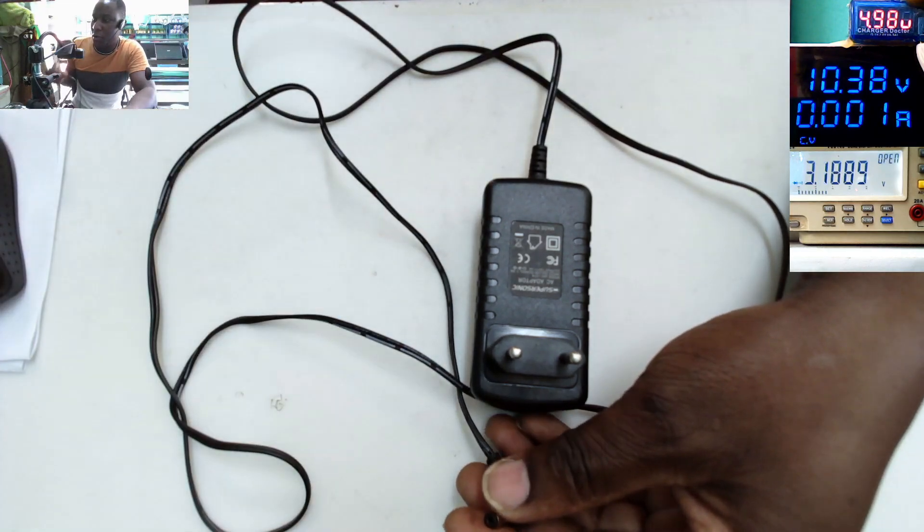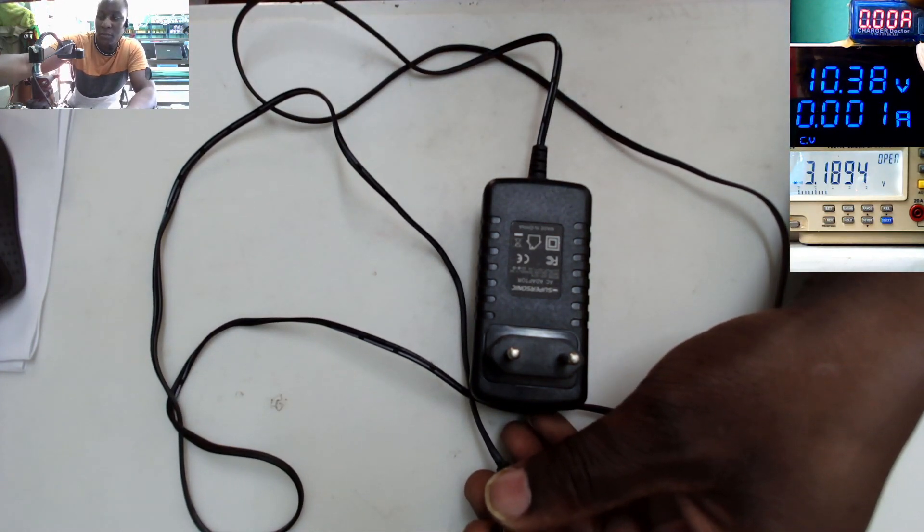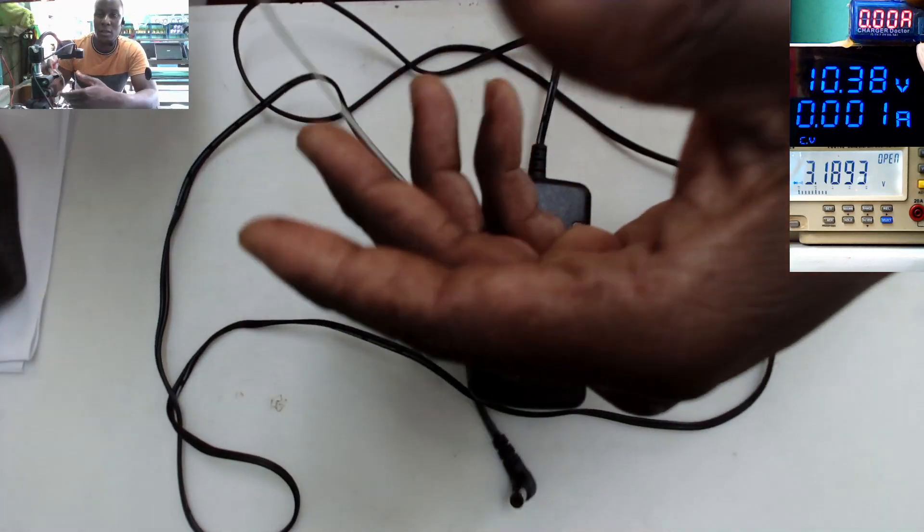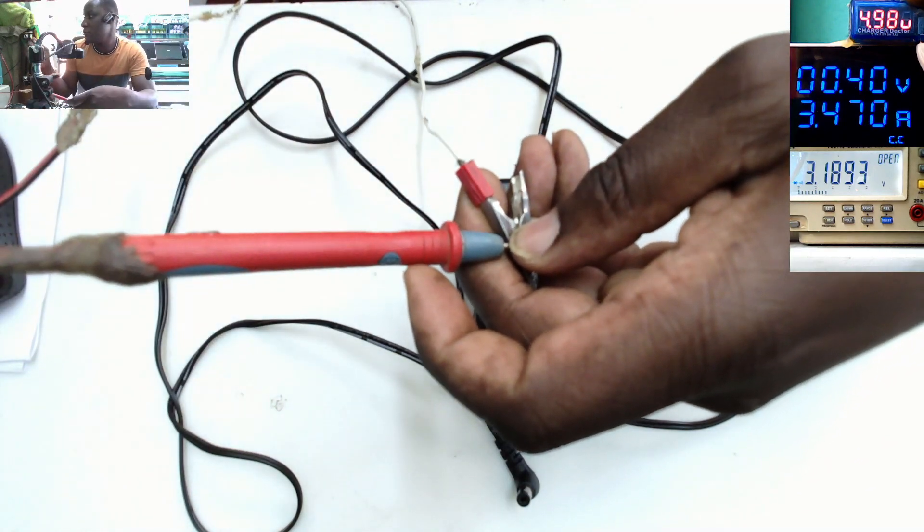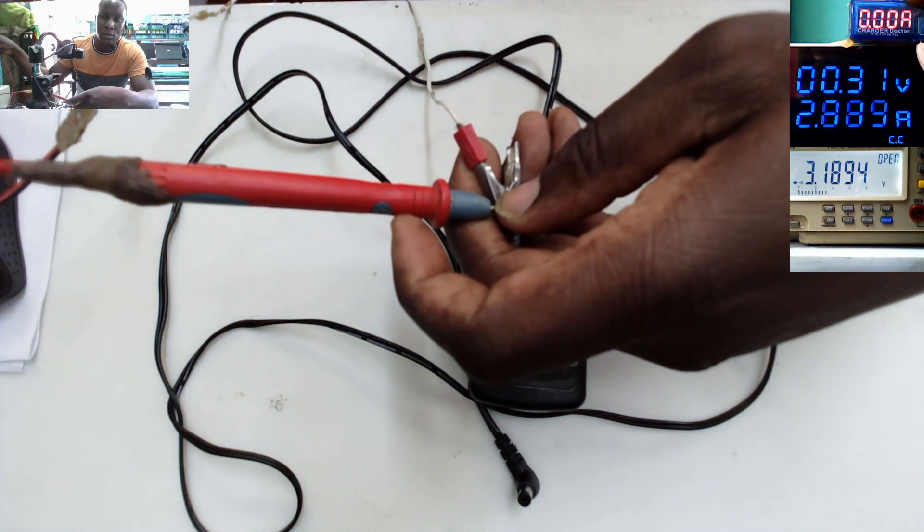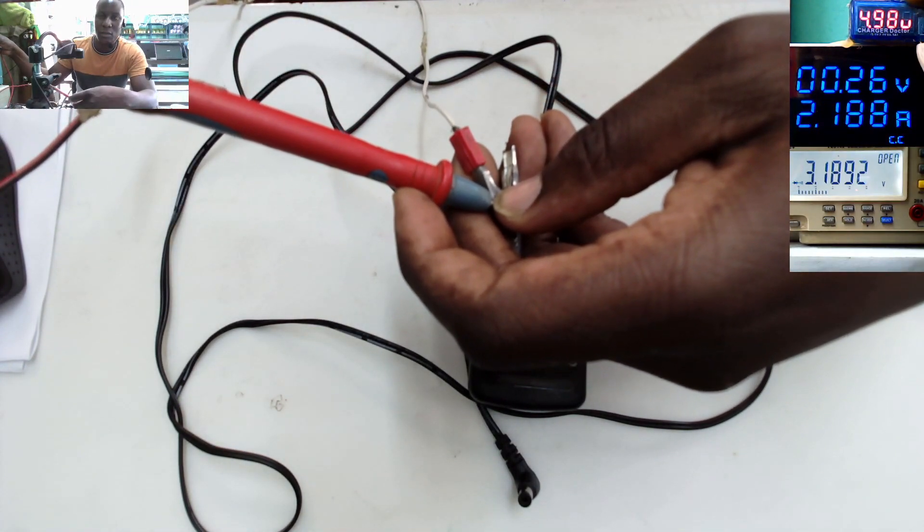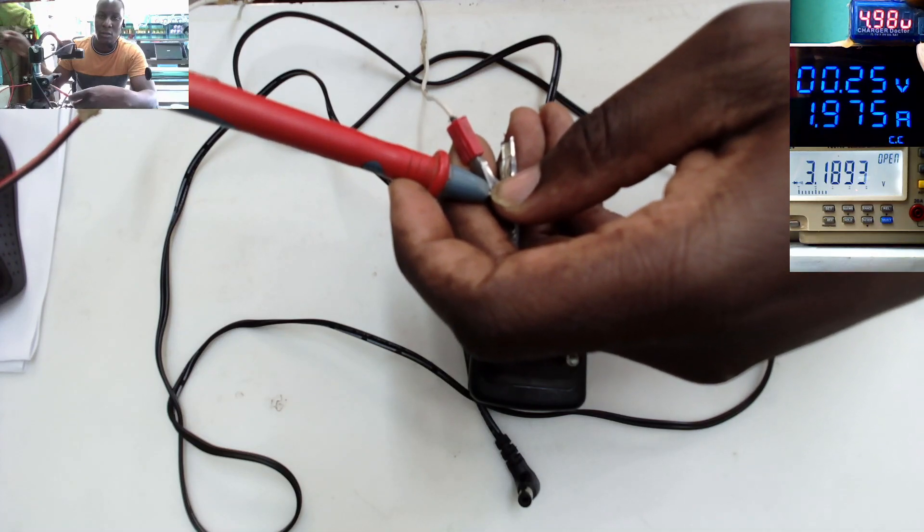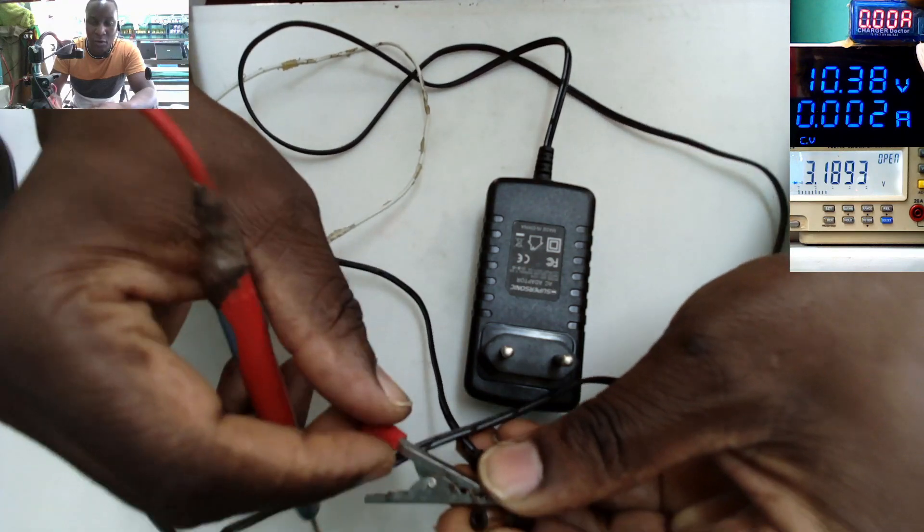The power supply is set to 10.3 volts around 3.4 amps. Let's lower the current to 2 amps, 1.9. Let's come with the power supply on the output.